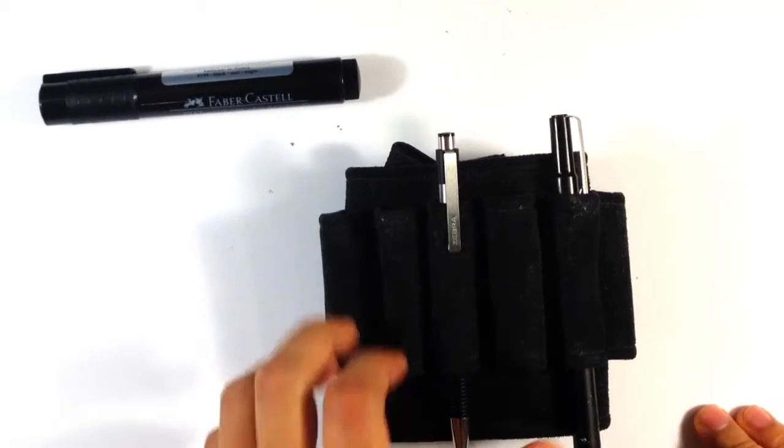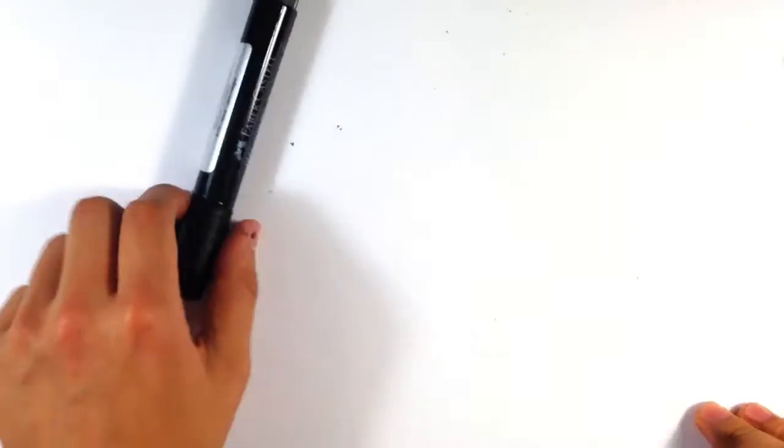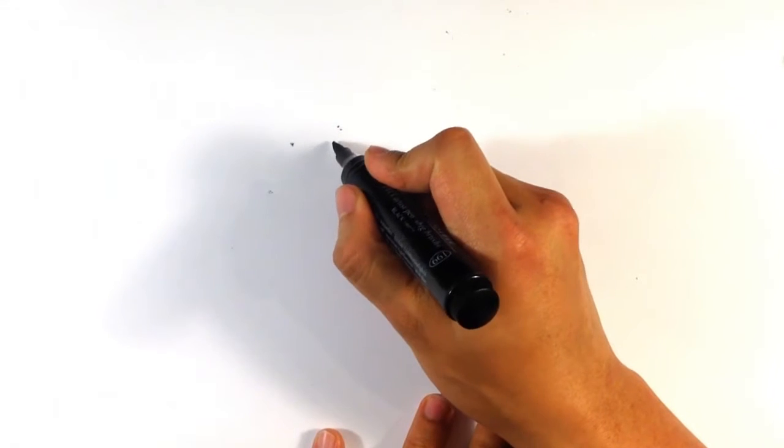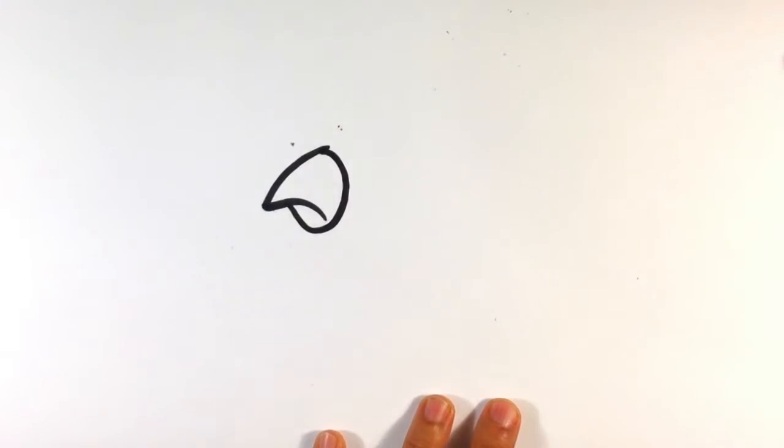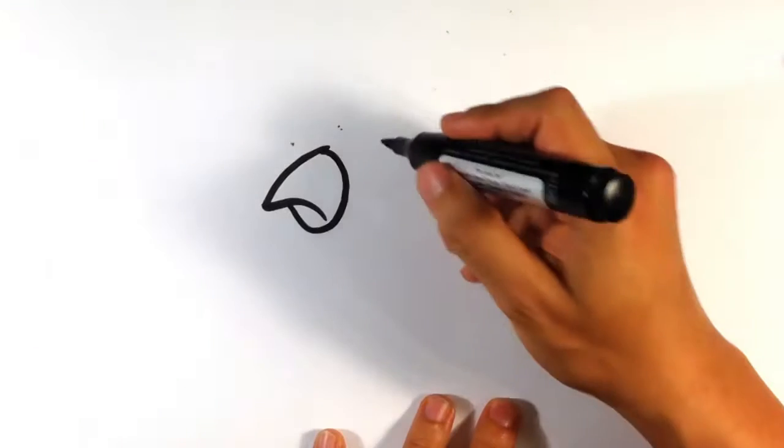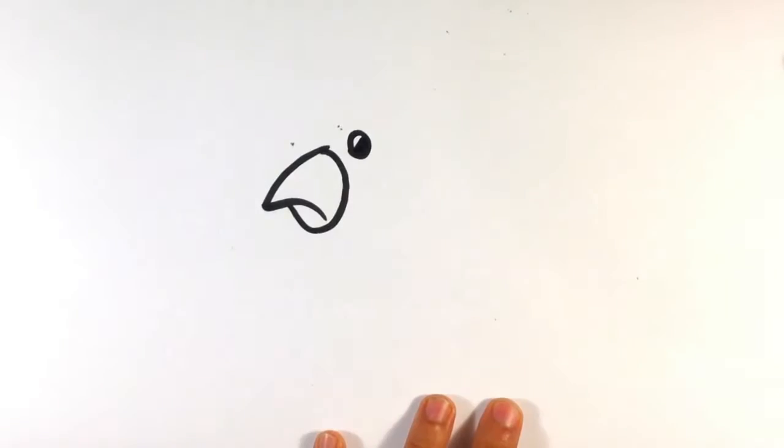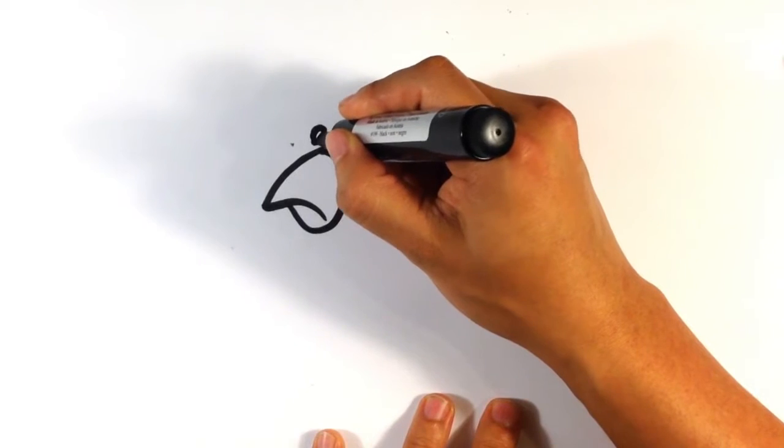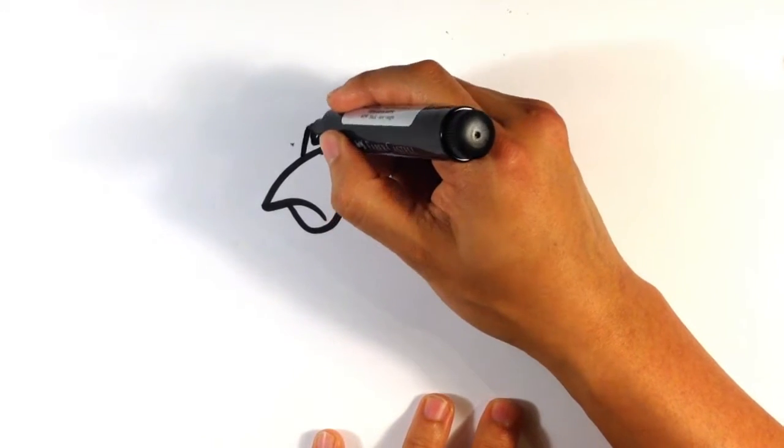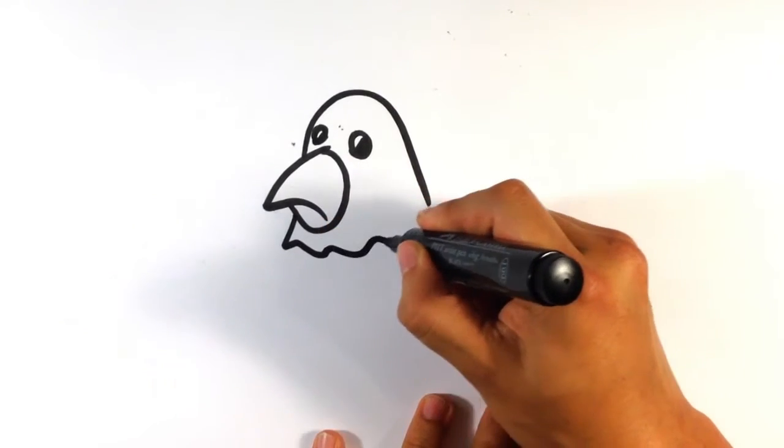Anyways, let's get into the drawing. We're drawing a bird, Christmas bird. Beak, the beak shape, very simplistic shape. Eye, other eye, top of the head.